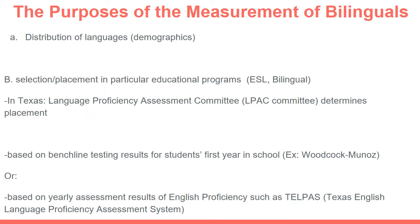Bilinguals are measured in various ways and for various purposes. The first way is often through the census or through a language distribution survey. These are demographic tools to find out where certain speakers of languages live and what percentage of the population is speaking a language other than English. Another reason bilinguals are measured is for selection or placement in particular educational programs, such as bilingual programs and ESL programs.